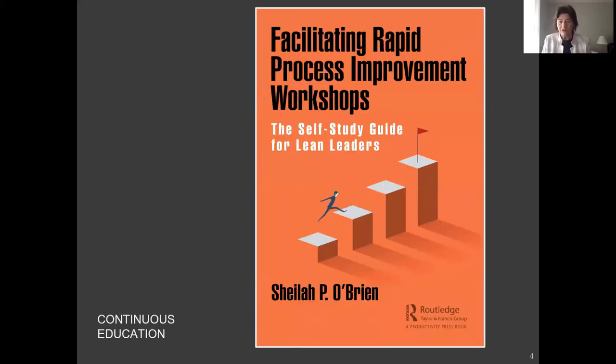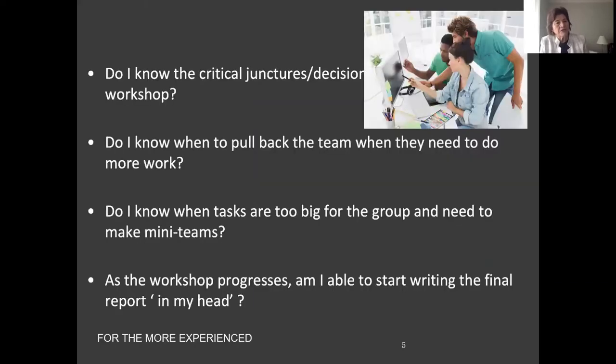Here's the manual, Rapid Process Improvement Workshops. It's a self-study guide. For those who may not be familiar, it's very similar to Kaizen, a blitz, an accelerated improvement event. The intention is that improvements are analyzed and implemented quickly. It has a work team made up of frontline workers and a trained facilitator. This is called Rapid because everything happens within three to five days.